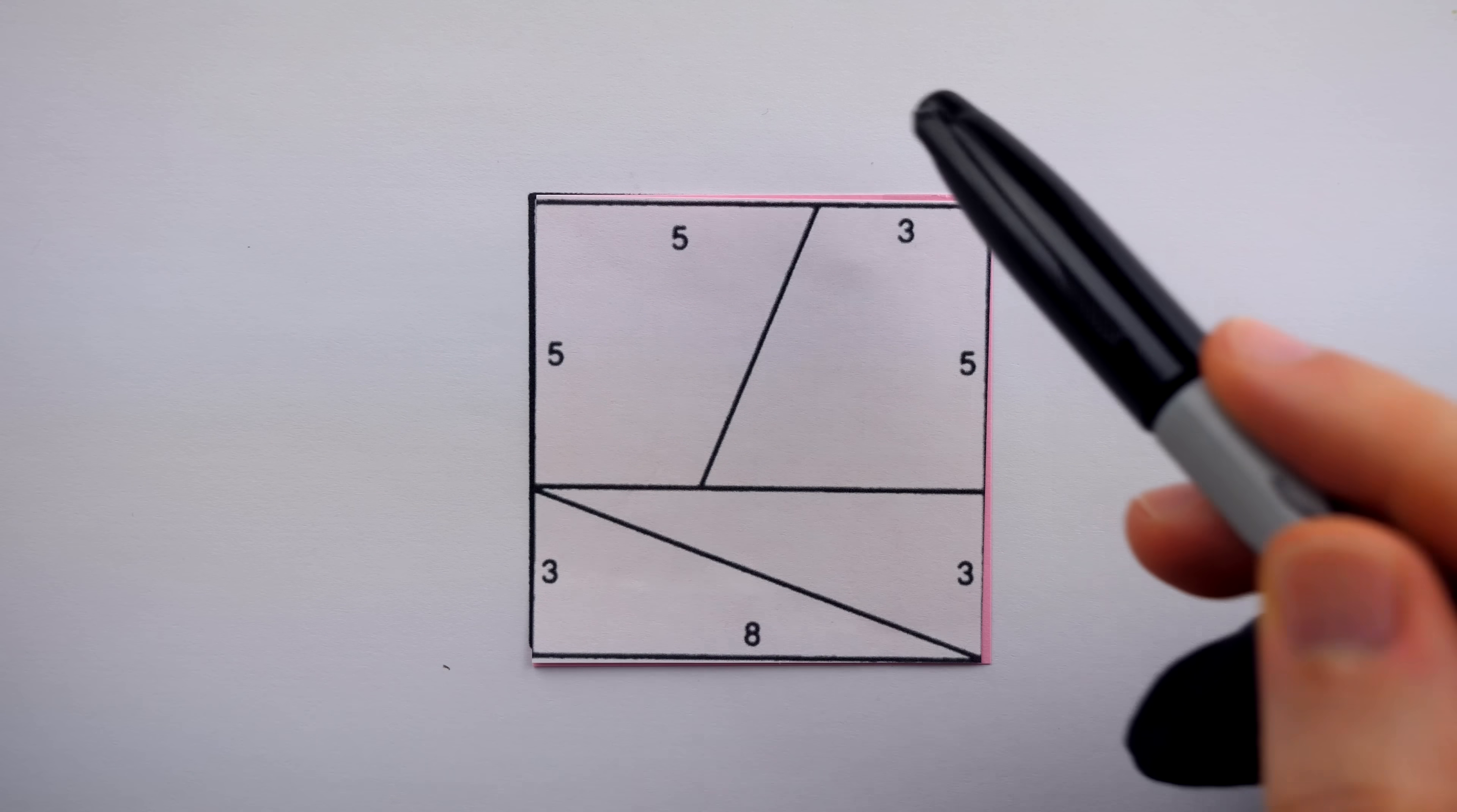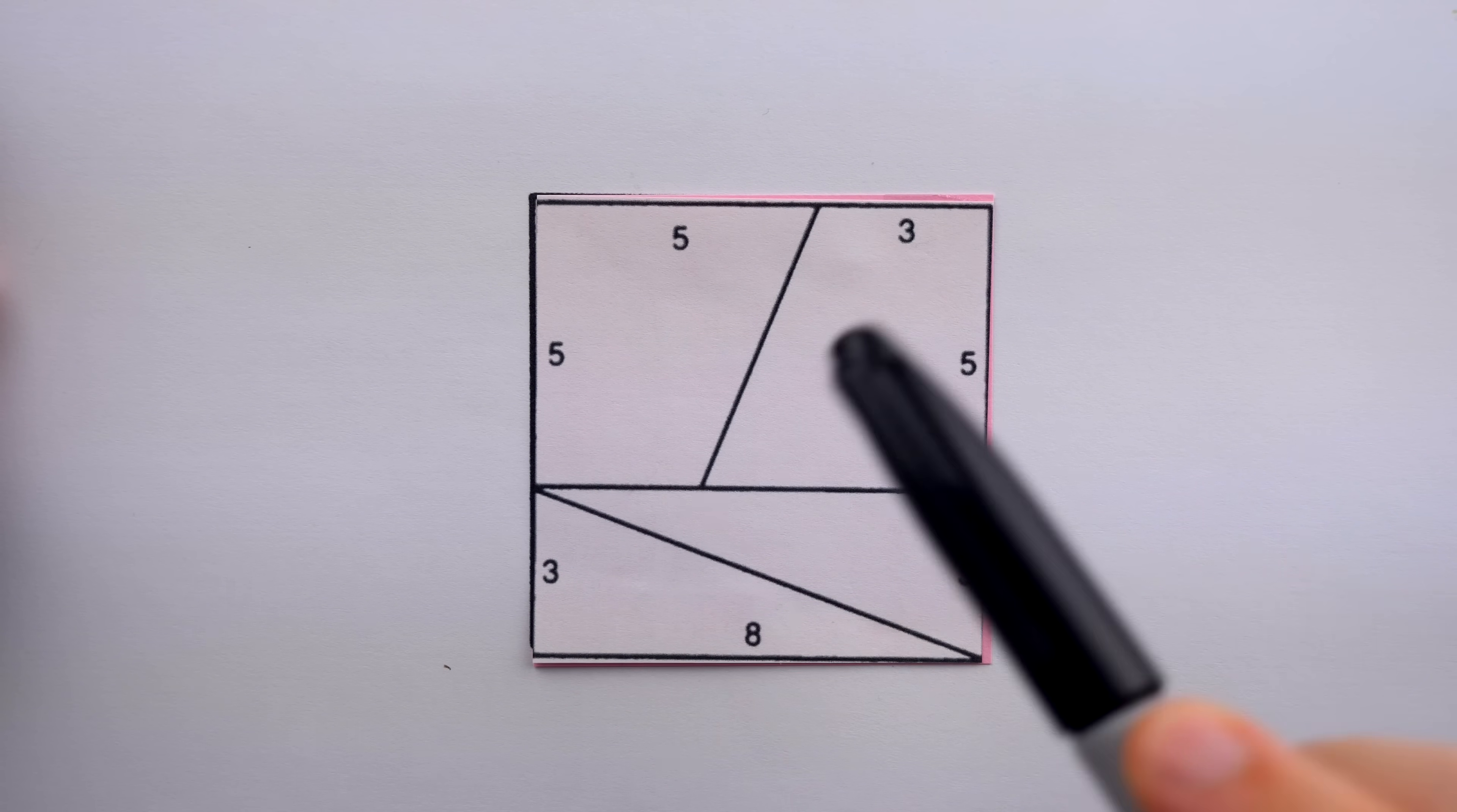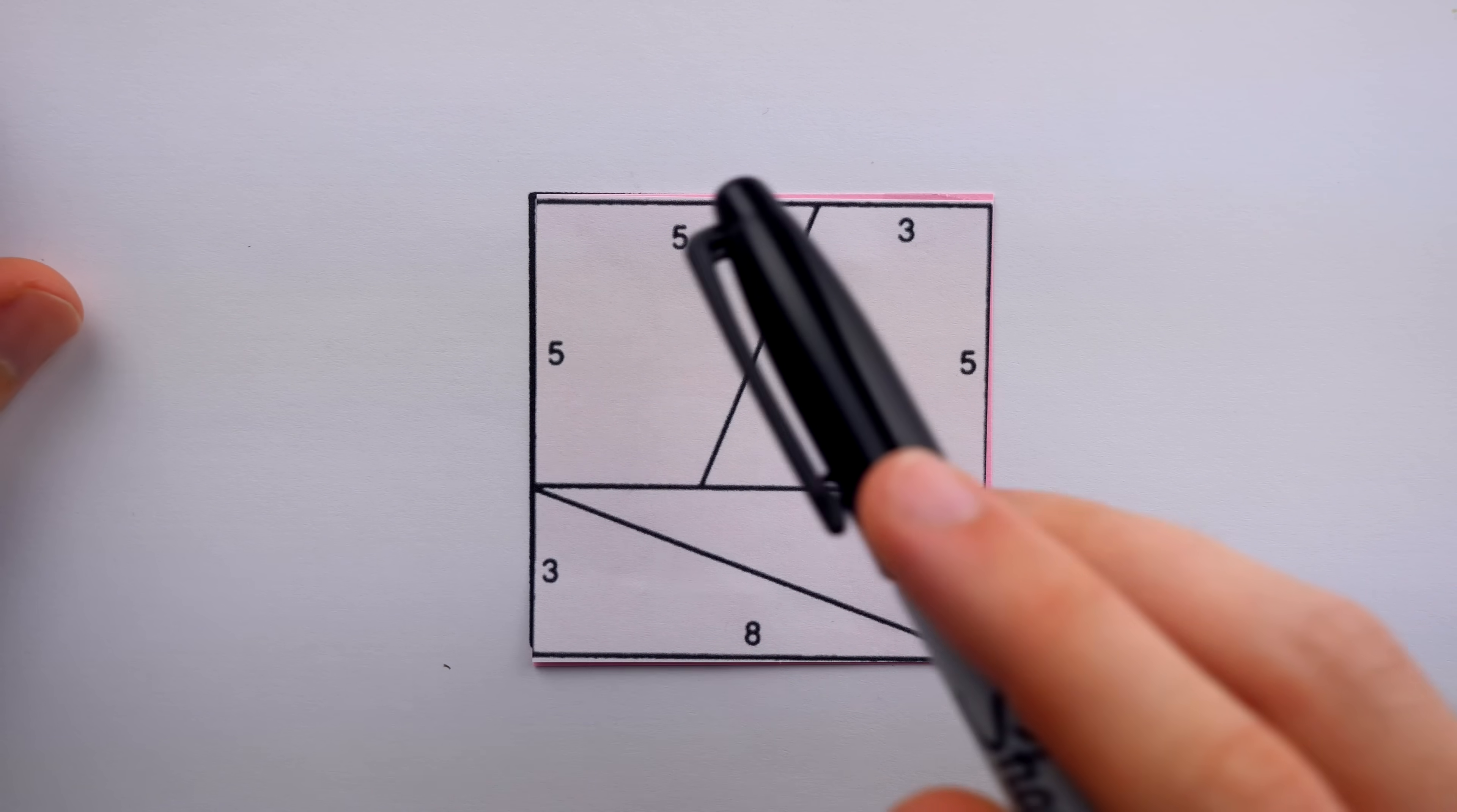And note that this diagram is to scale, so we don't know what the units are, inches, centimeters, dollars per kilobyte, cents per kilobyte, but it is indeed the case that the ratio of this segment to this one is 5 to 3. And for example, the ratio of this segment to this one is 8 to 3, so it is to scale.